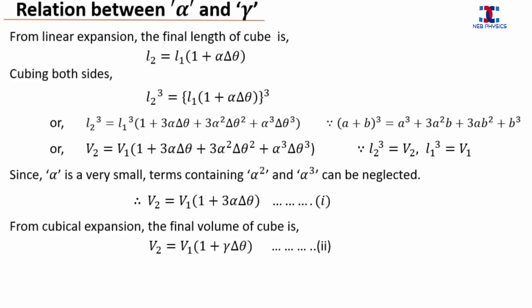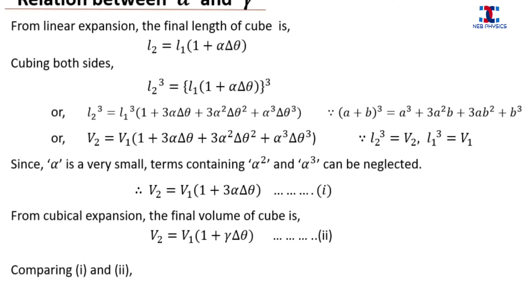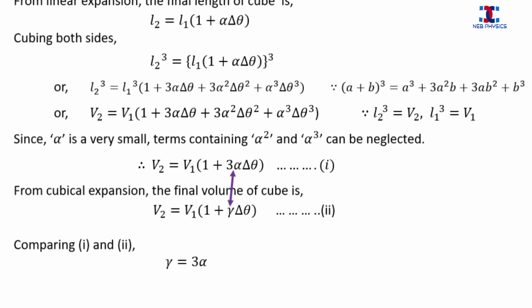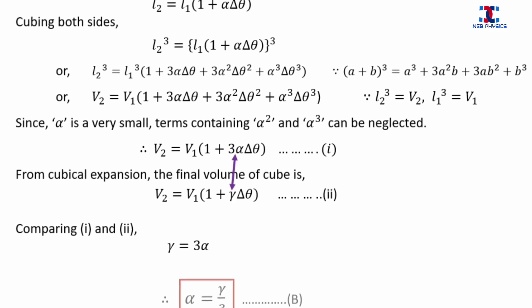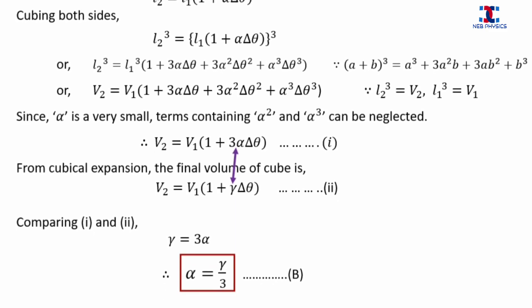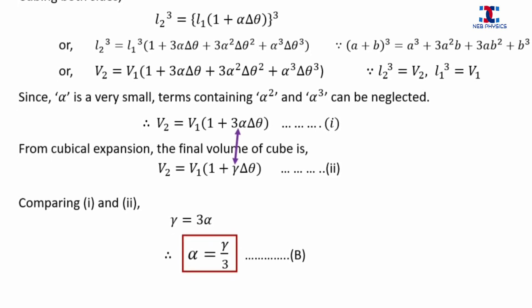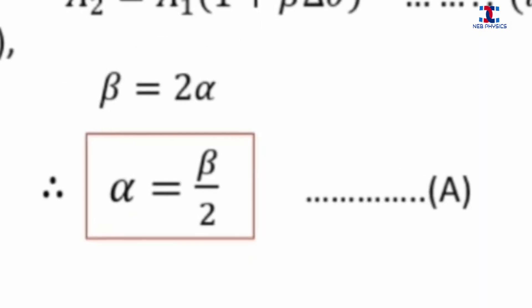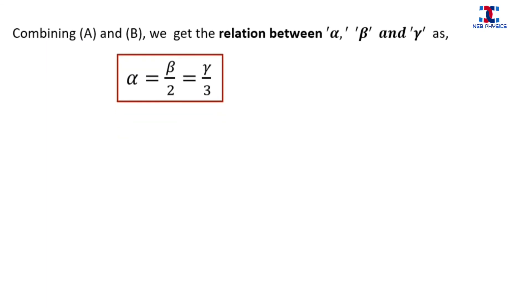We know that equation 1 and equation 2 are both true. When we compare them we get gamma is equal to 3 times alpha. Finally we get alpha is equal to gamma by 3, and this is the relation between alpha and gamma. When we combine these two results, we finally get the relation between alpha, beta, and gamma: alpha = beta/2 = gamma/3.